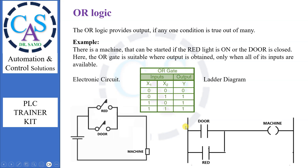Move further for OR logic. The OR logic provides output if any one condition is true out of many. For example, there is a machine that can be started if the red light is on or the door is closed. The electronic circuit clearly exhibits that only one condition is required to generate output — red light or door, only one signal is required to complete the circuit.